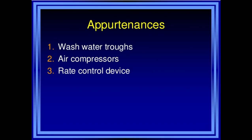The third appurtenance is rate control devices. For each filter, the flow of the influent, the wash water supply, and the wash wastewater must be controlled by suitable devices. A constant rate of filtration is essential — a sudden increase in filtration rate may cause water to break through the filter material without proper treatment, while a sudden reduction in rate may release bubbles of gas entrapped in the filter.